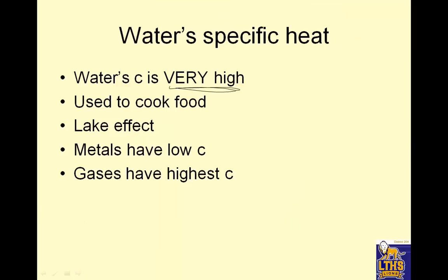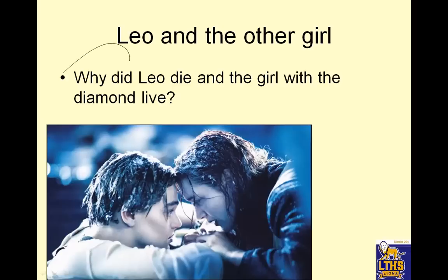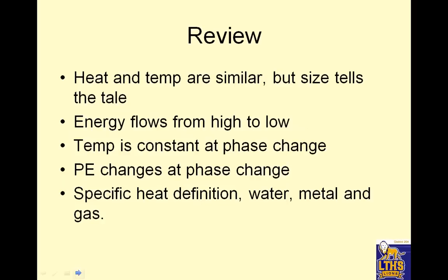Water's specific heat is very high, which means it changes temperature slowly. It's used to cook food because of its very high specific heat. Lake effect means big water bodies have a constant-ish temperature — the lake is almost never outside 30 to 80 degrees Fahrenheit. Gases have a high specific heat because they're spread out so much. Bonus question: why did Leo die and the girl with the diamond live? Answer that in class tomorrow. Great discussion — toodles!